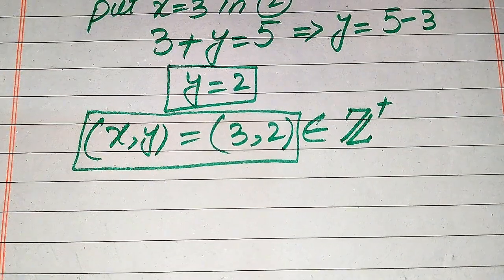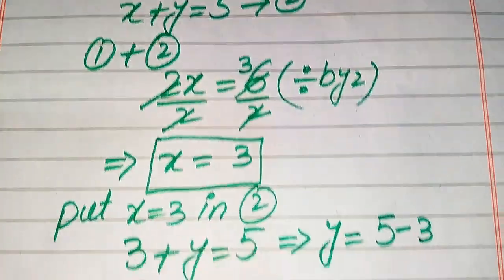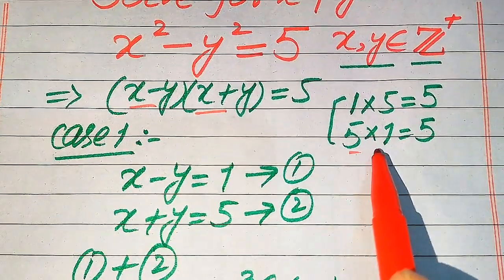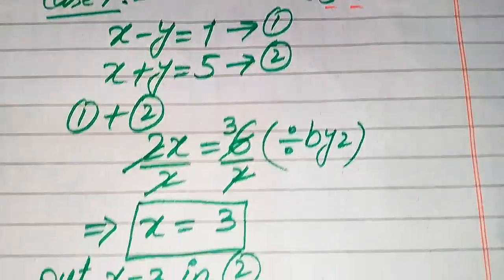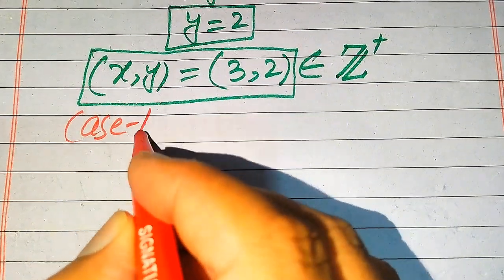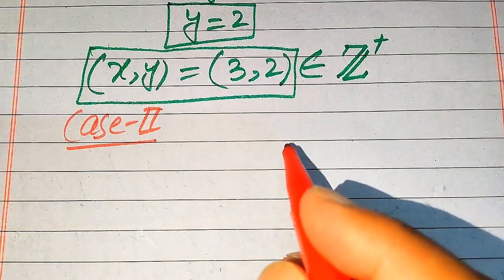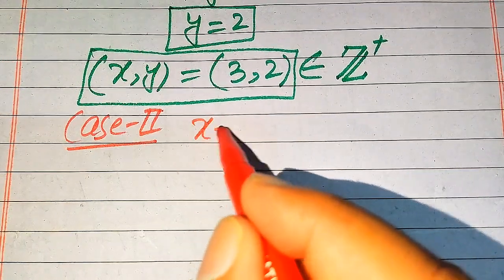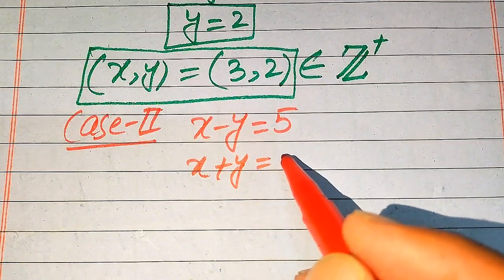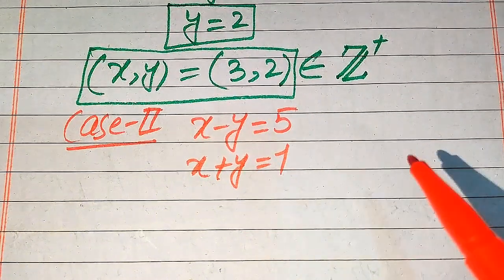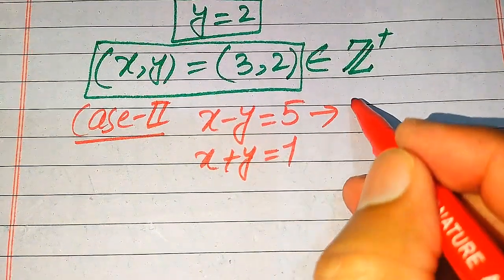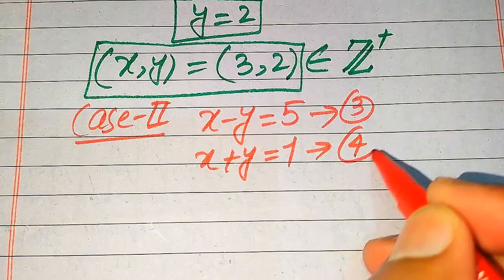To find the second solution we write Case 2. In Case 2 we compare the two factors with the values in the opposite order, giving us x minus y equals 5 (equation 3) and x plus y equals 1 (equation 4).